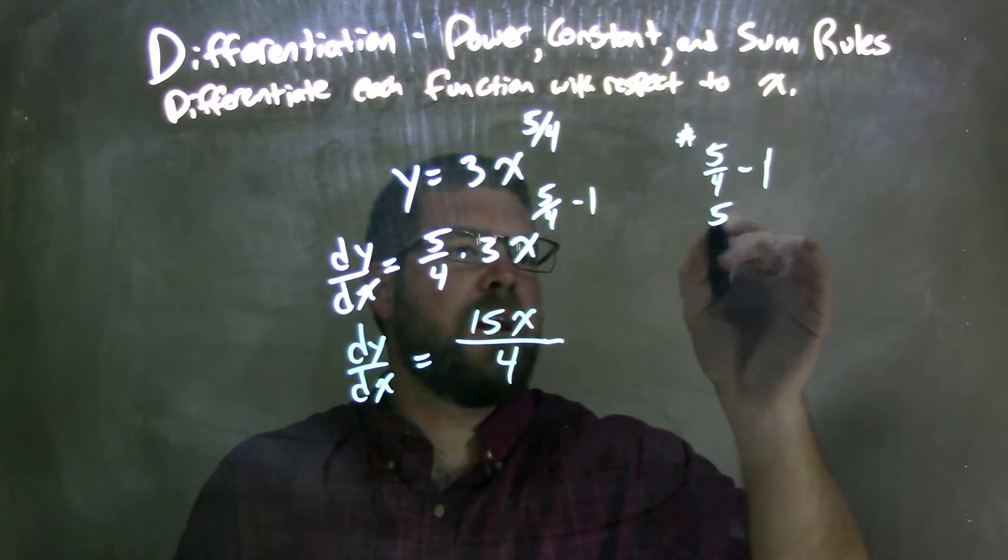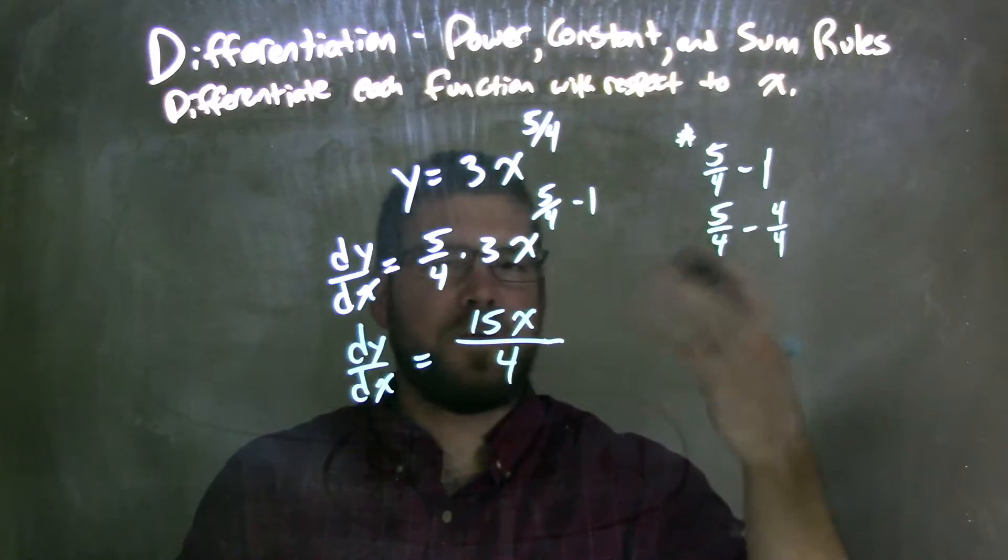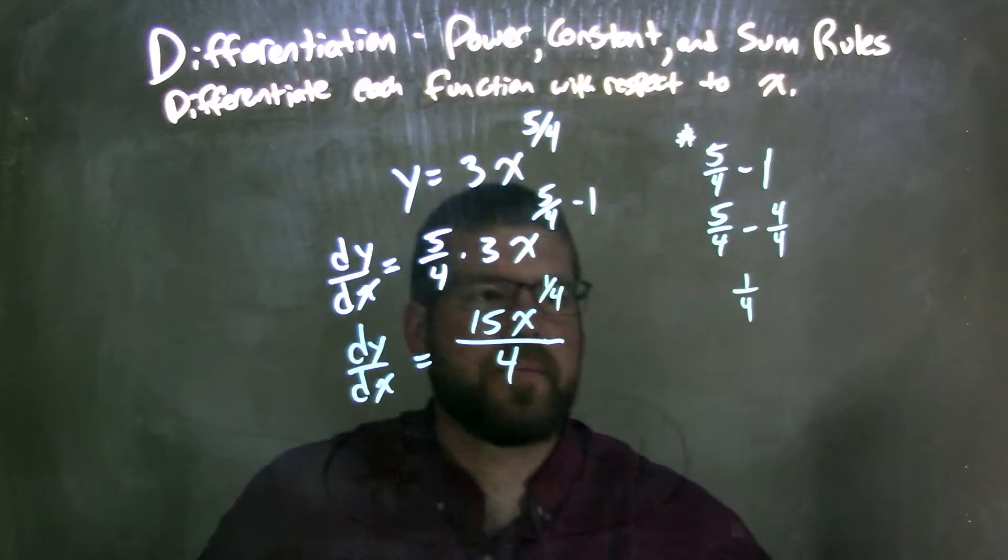5/4 minus 1 is the same thing as 5/4 minus 4/4. 5/4 minus 4/4 equals a fraction, it's just 1/4, and so our exponent here is just 1/4.